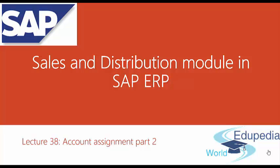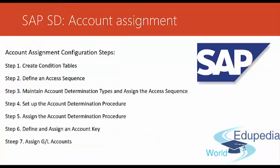Hello everyone and thank you for watching Edupedia World videos. In this lecture, we will continue to talk about account assignment in the Sales and Distribution module of SAP ERP System. In our previous lecture, we began to talk about account assignment configuration steps. We learned how to create condition tables, how to define an access sequence, and how to maintain account determination types and assign the access sequence. And now we are ready for the next step.